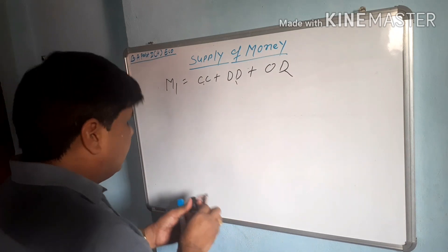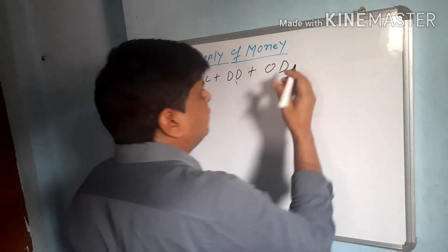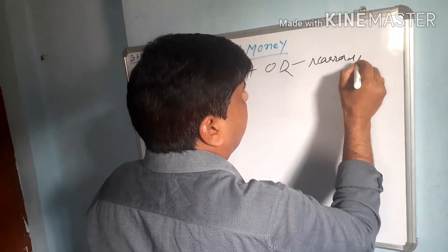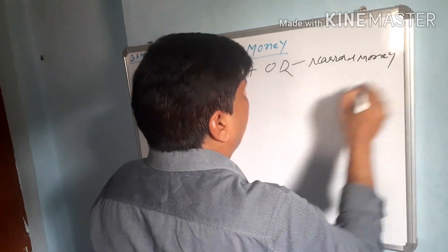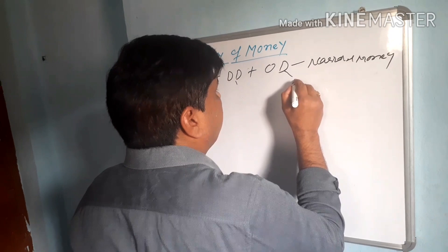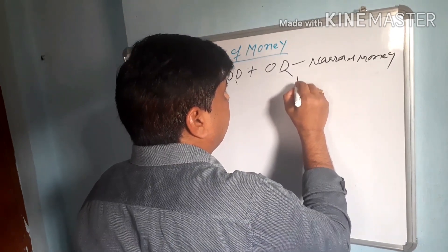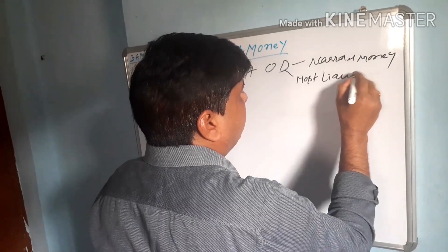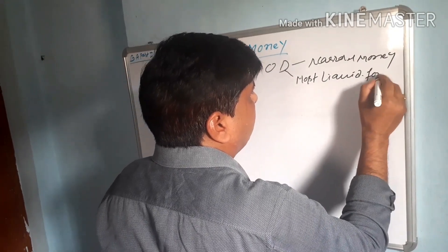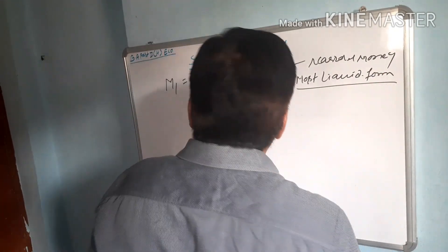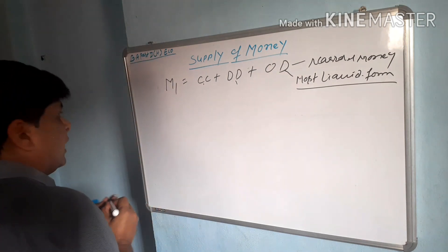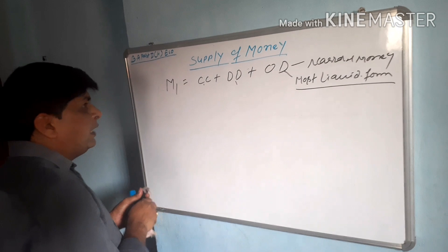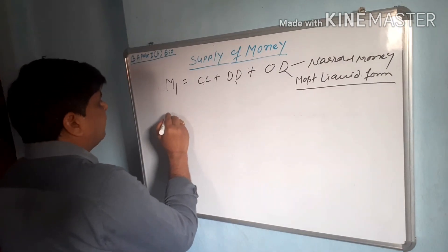M1 को हम narrow money भी बोलते हैं, और यह most liquid form है। बहुत ही तरल होता है — जब चाहे public इसे cash कर सकता है। इसके बाद आता है M2।